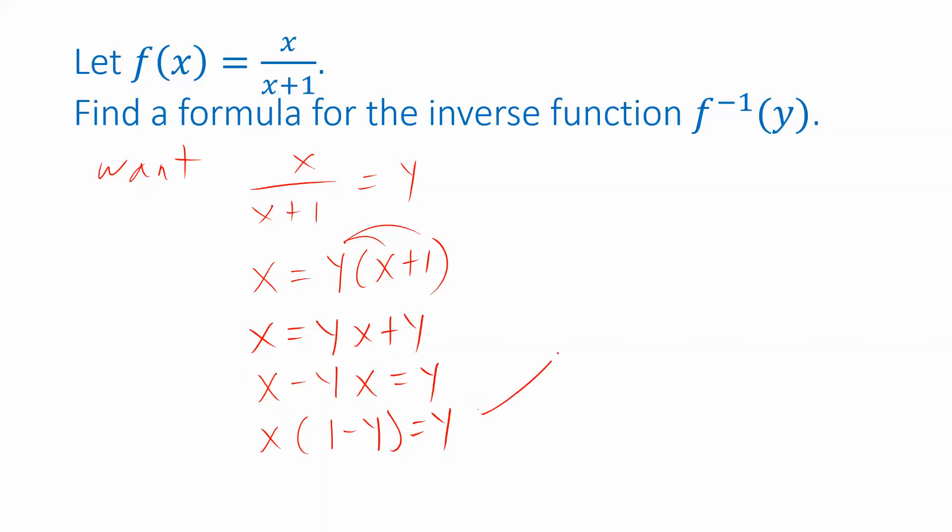And then finally there's only one more step in order to isolate x. I divide both sides by 1 minus y. So f inverse of y is this function y over 1 minus y.